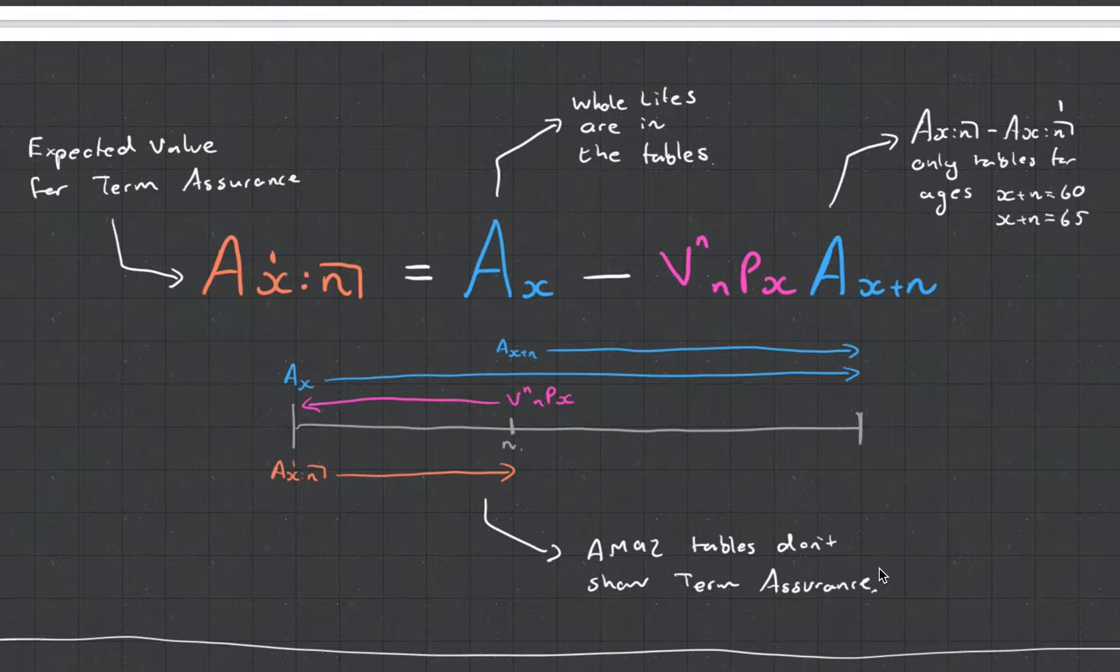This looks tricky at first, but it actually makes a lot of sense. What we're saying here is, what is the value of a term assurance? This is the symbol for a term assurance, and a term assurance is like a whole life assurance, which is represented by the blue ones. However, it has an expiry date of N years.